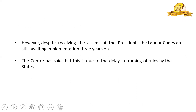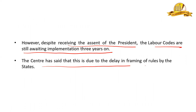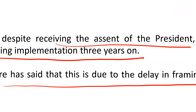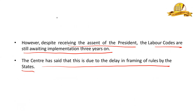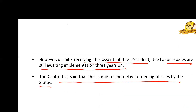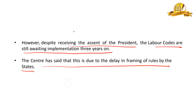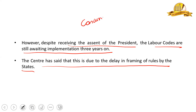However, despite receiving the assent of the President, the labor codes are still awaiting implementation for three years. The center has said that this is due to the delay in framing of rules by the states. Labor is on the Concurrent List — both the central list and state list — and both the central and state governments must frame rules before implementation.